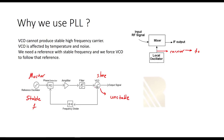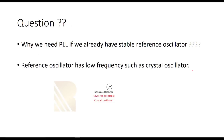But something is missing here, and this is a little confusing for many people — it's a very common question in PLL design. The question is: if we already have a reference oscillator with a stable frequency, why do we bother making such a system? Why not just connect the reference oscillator directly to the mixer for a stable carrier? Maybe this seems possible, but it's not. We are going to answer this: why do we need PLL if we already have a stable reference oscillator?